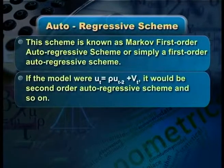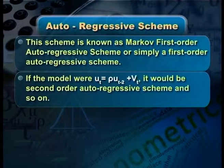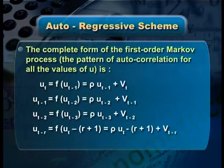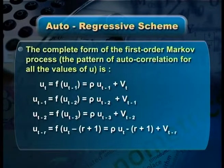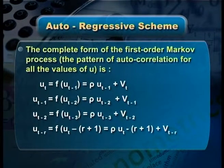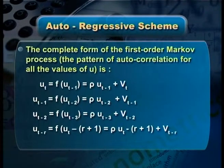If the model were ut = ρ·u(t−2) + vt, it can be called the second-order autoregressive scheme and so on. The complete form of the Markov first-order process shows that ut is a function of u(t−1), u(t−1) is a function of u(t−2), u(t−2) is a function of u(t−3), and so on through u(t−r).